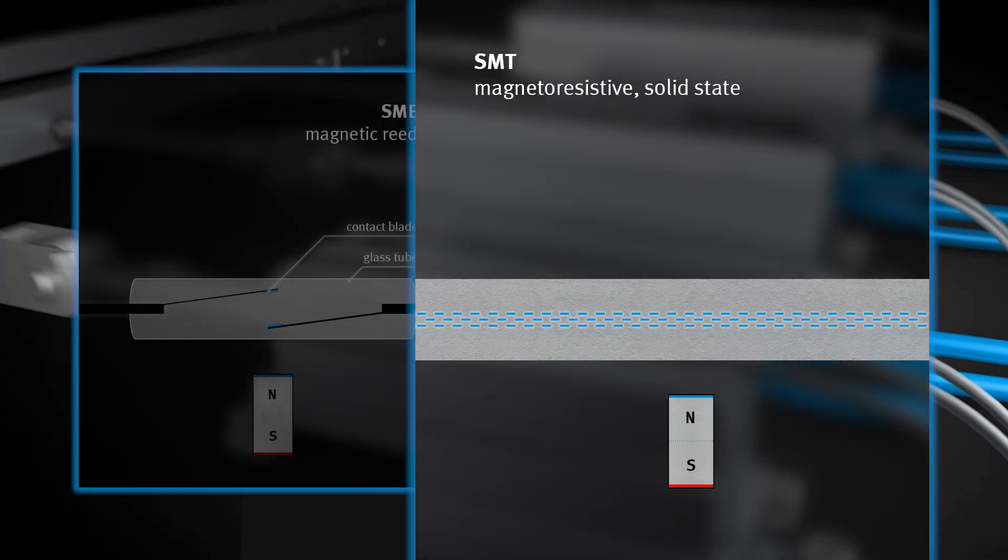A magnetoresistive sensor such as the SMT uses semiconductor components. There is a certain predetermined resistance in the sensor. If the magnetic field of the piston approaches, the electrical resistance changes and the electrons can no longer flow unhindered in a straight line through the material. As a result, the resistance increases, which is detected and passed on as a signal.